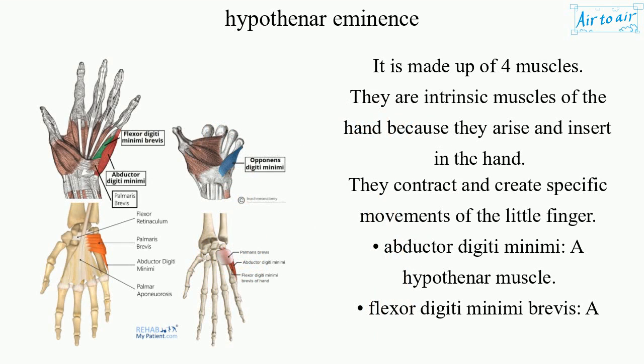It is made up of four muscles. They are intrinsic muscles of the hand because they arise and insert in the hand. They contract and create specific movements of the little finger.